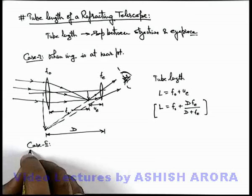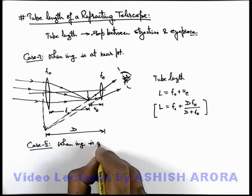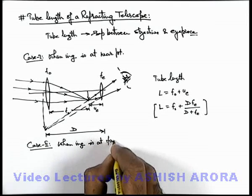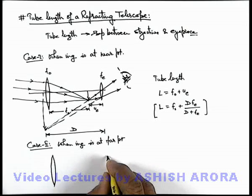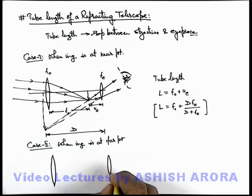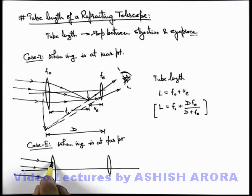...when image is obtained at far point, that is at infinity. So again, if we draw the setup here, we can see the only difference in the two cases is when the intermediate image is produced by this objective lens in its focal plane.